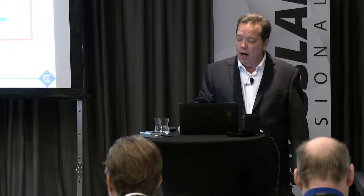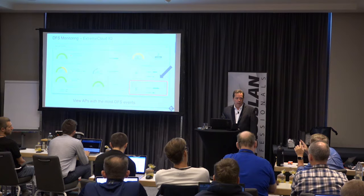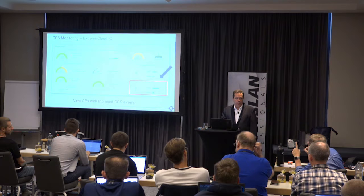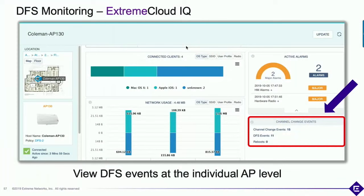You can drill all the way down to the individual AP level and see a detailed list of DFS events. If you're seeing a lot of events — ideally you'd want to see only maybe one or two false positives per week. If you're seeing more than that, you've got a problem. And yes, a correlation feature to detect false positives by comparing APs on the same site and same channel — not yet, but watch this space.